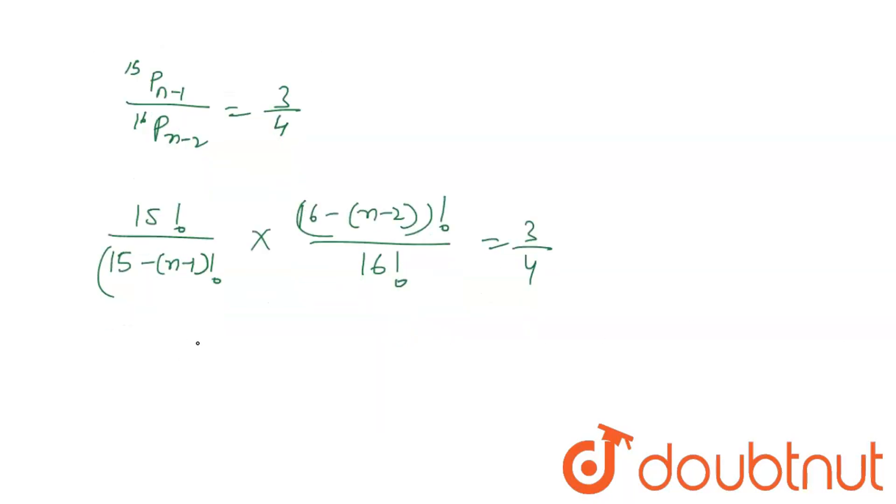Okay, so 16 minus n-2 by 15 minus n-1 times 15 factorial by 16 factorial. Because I can write it this way which should cancel. So here equals 3 by 4.